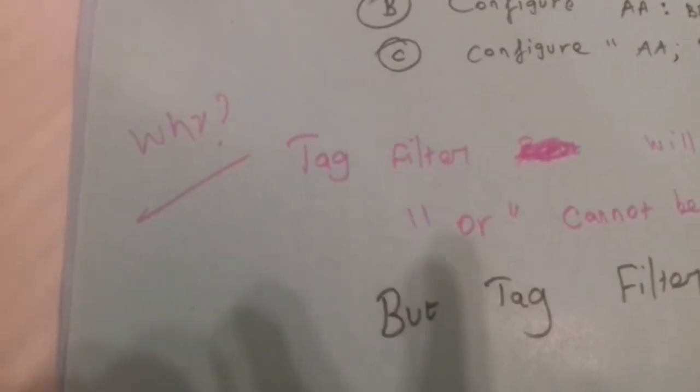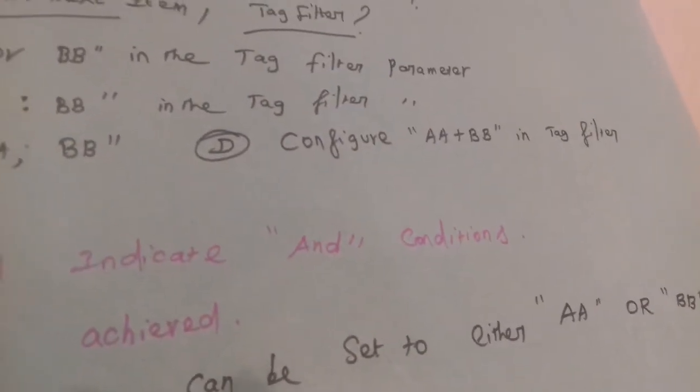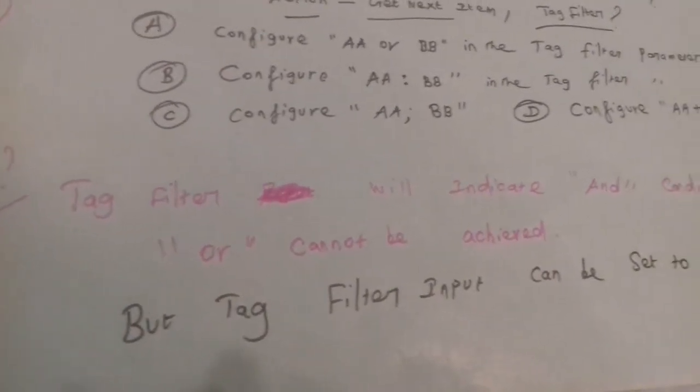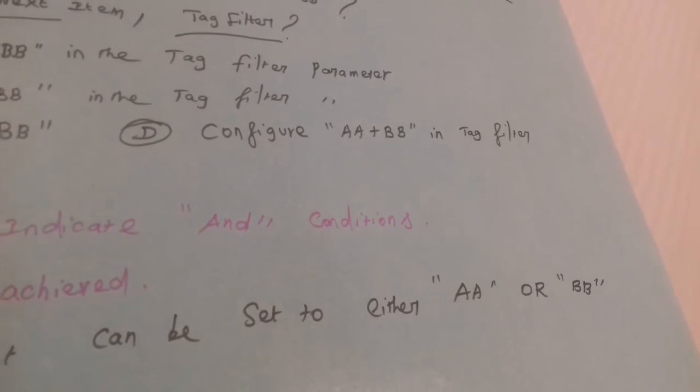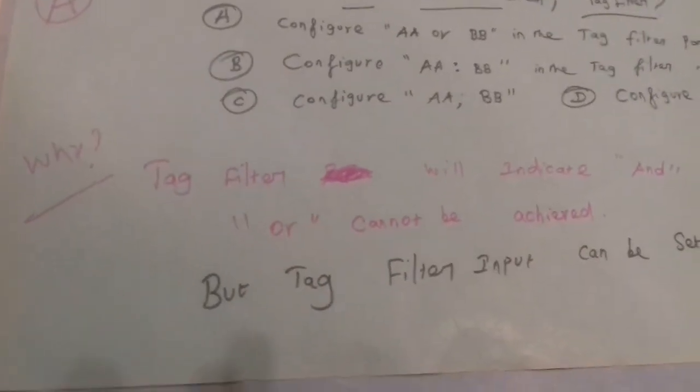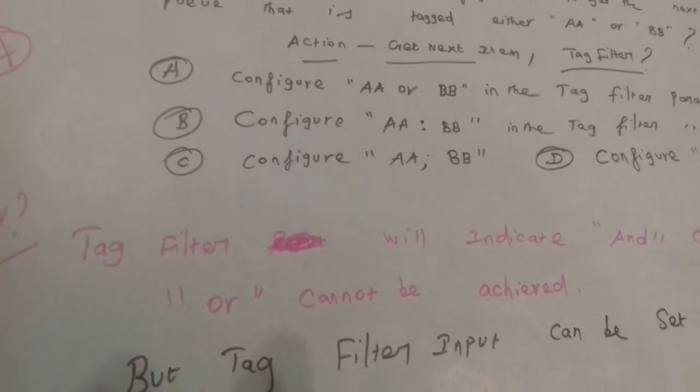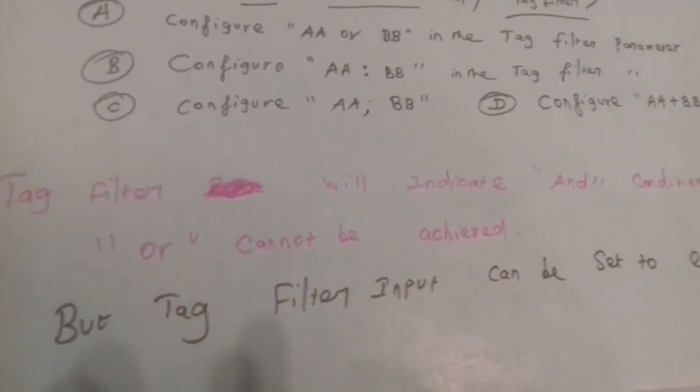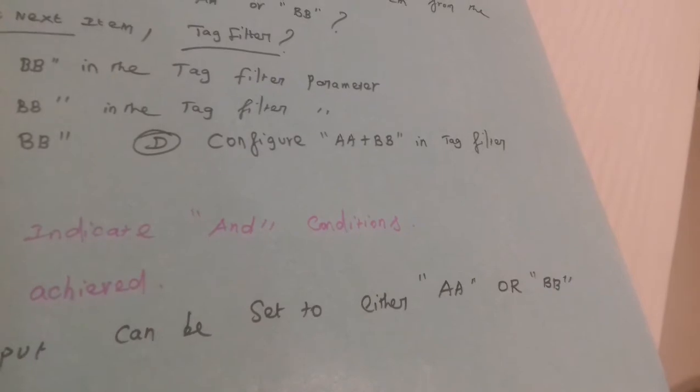When we talk about tag filter, tag filter will indicate AND conditions. OR cannot be achieved, but tag filter input can be set to either 'AA' or 'BB'.